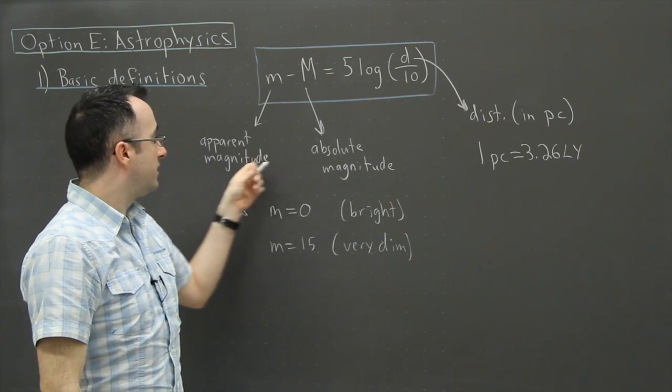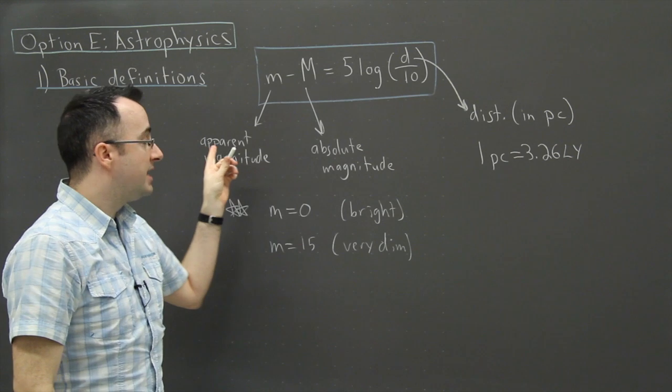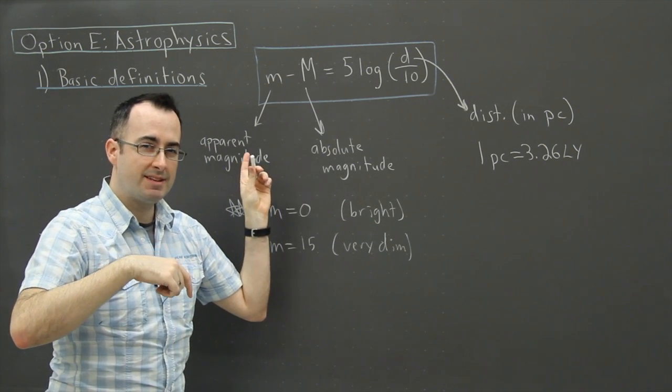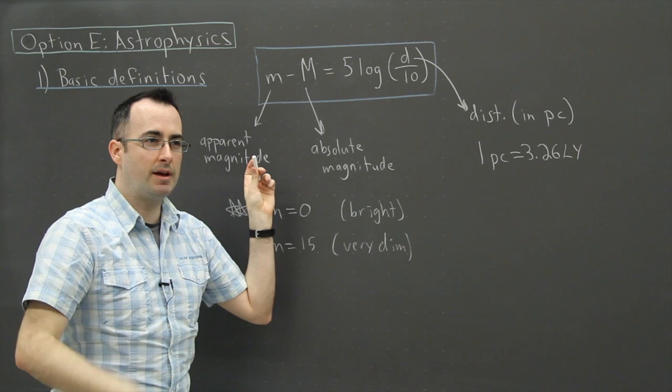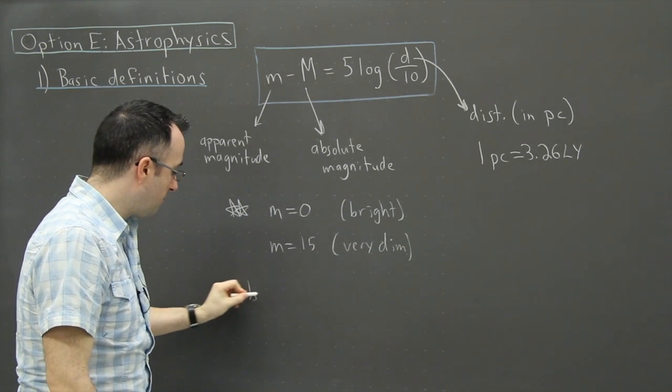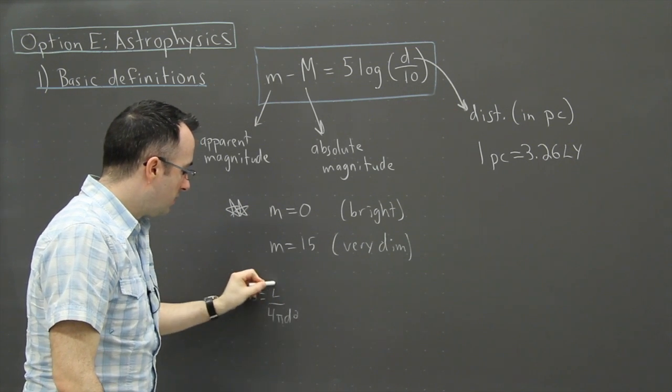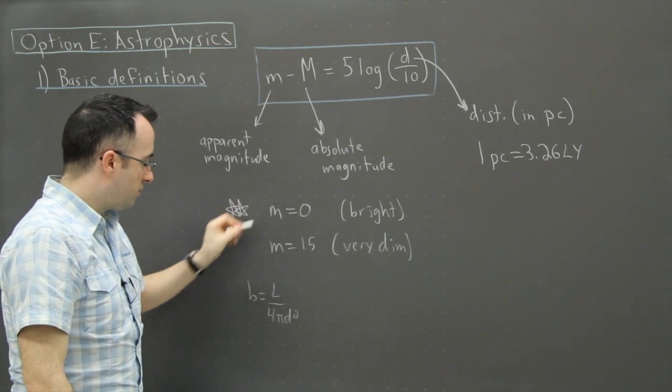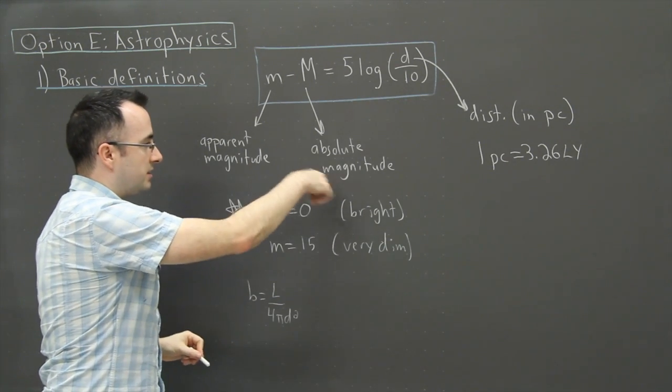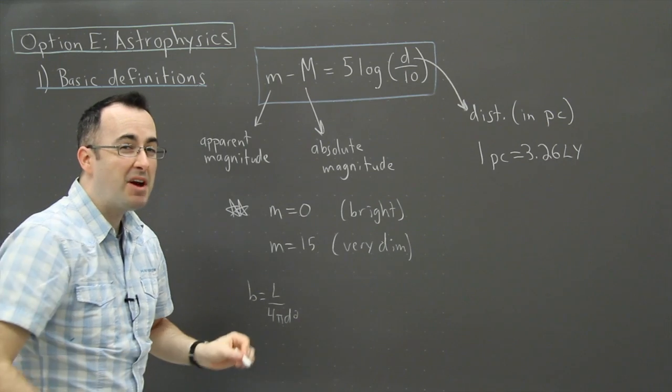Now what do we mean by apparent versus absolute magnitudes? Apparent magnitude is how bright it appears here on Earth. This is analogous to the apparent brightness. Remember the other equation we were looking at before, b equals l over 4 pi d squared. So apparent magnitude is kind of like b here. Whereas the absolute magnitude, that's kind of like l, in a sense, but not exactly.